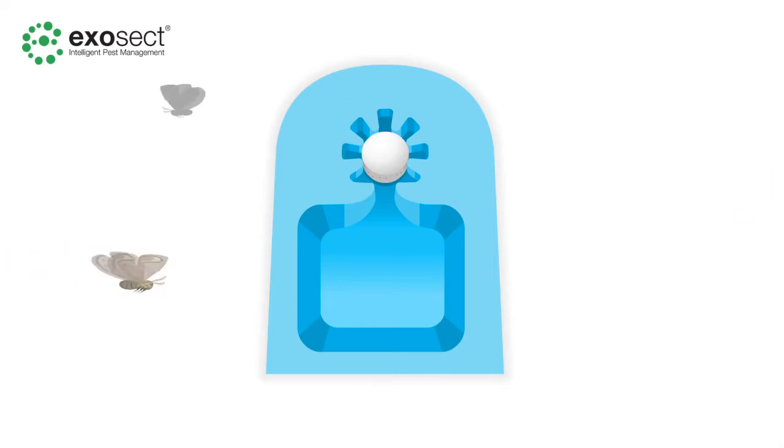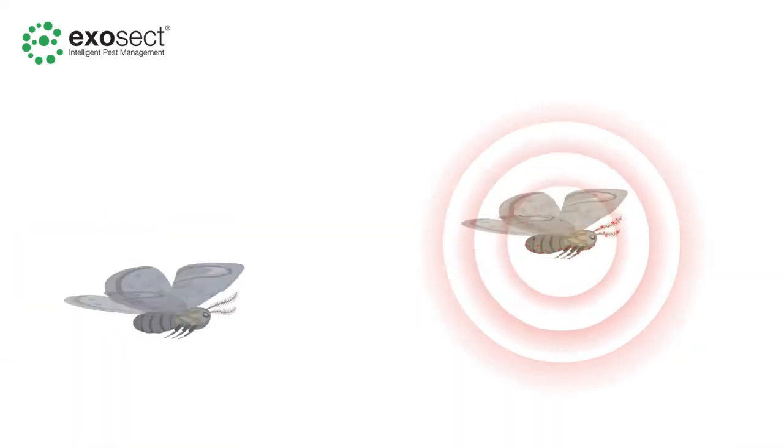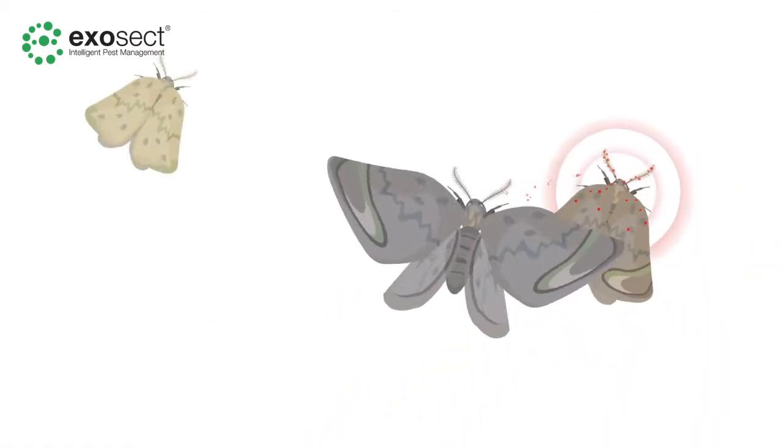A male carrying entostat powder will form a mobile pheromone dispenser, producing false pheromone trails, which in turn attracts additional males. Contact between the males ensures that the entostat powder and the confusion effect is automatically passed on.